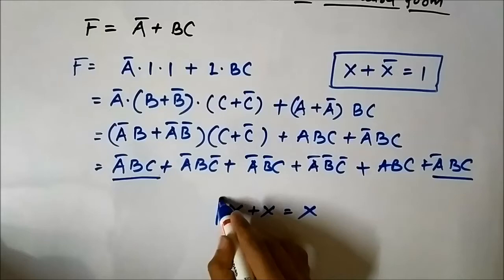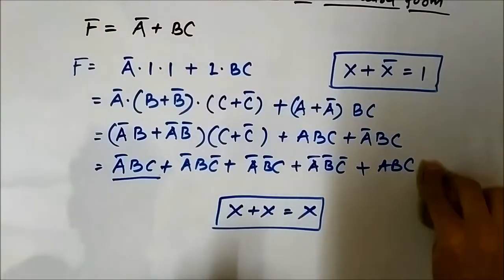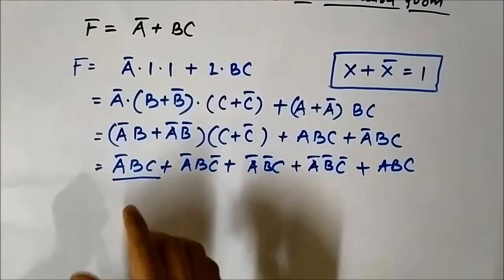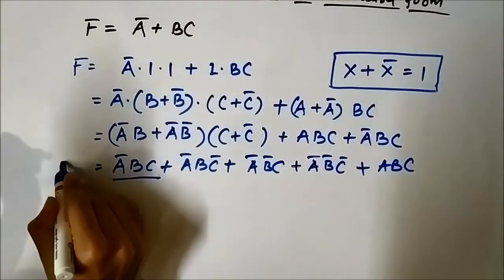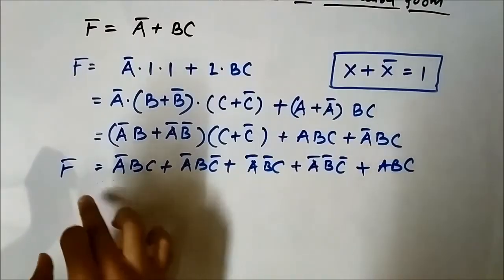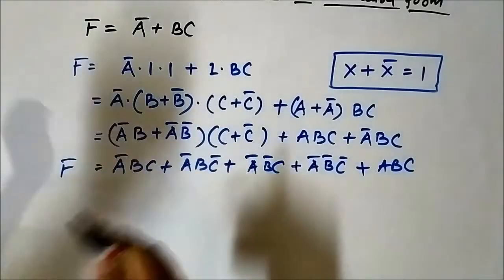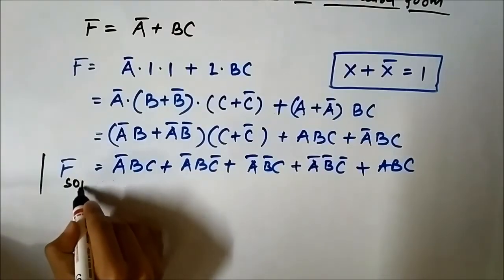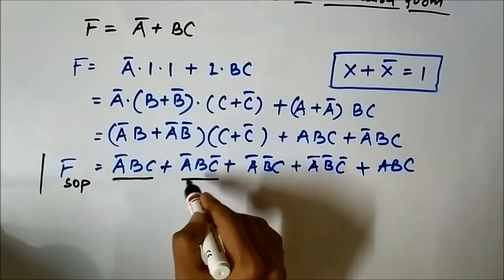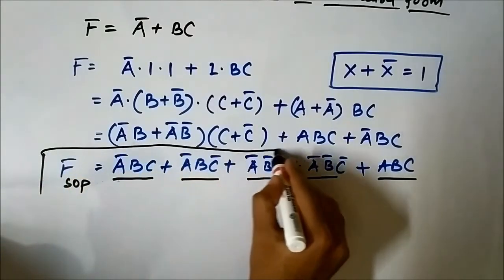Using the identity x plus x equals x, we simply remove the extra repeated A bar B C term. The final sum of products expression is now in standard form, as each min-term contains all three variables. These are all product terms where all variables are multiplied together, and then all terms are added — giving us the sum of products form.